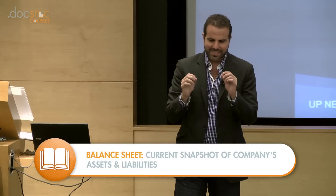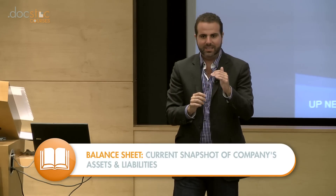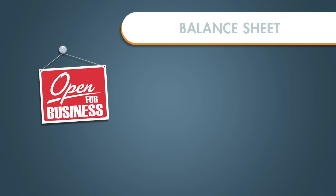Your balance sheet is a snapshot in time — at this very moment — of your assets, your liabilities, and how they interplay together. It looks at your business and asks: what are the total assets I have, what are my total liabilities? The three components of the balance sheet are your assets, your liabilities, and your shareholder's equity. The rule of thumb is that assets minus liabilities equals shareholder equity. The balance sheet gives a snapshot of the financial health of your business at a point in time.